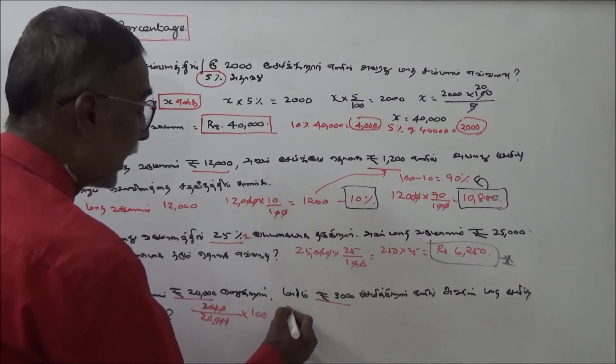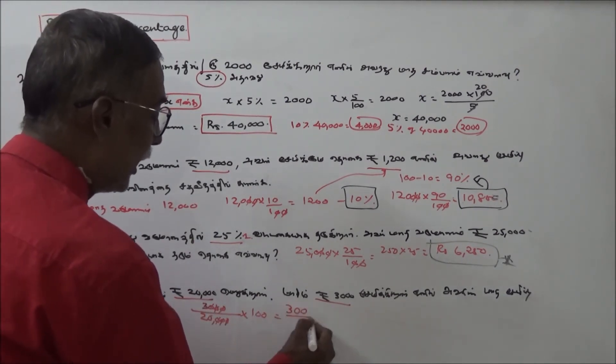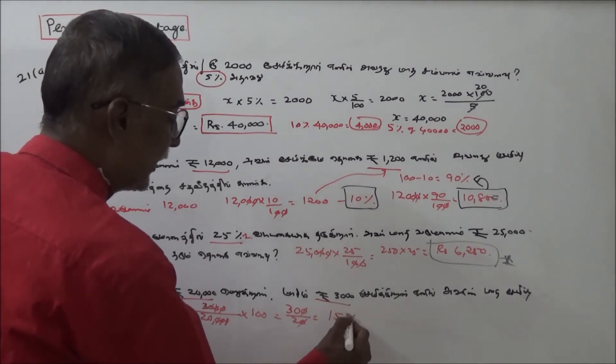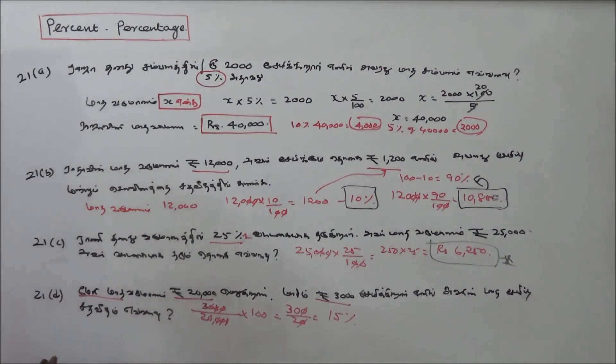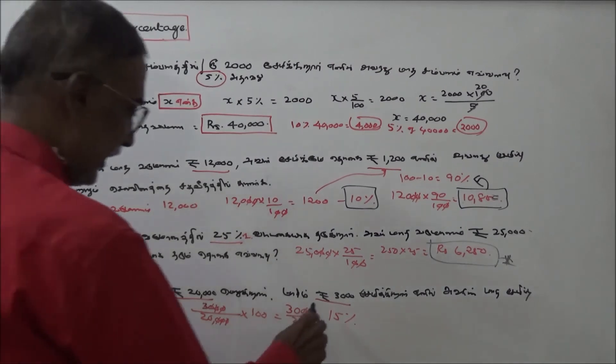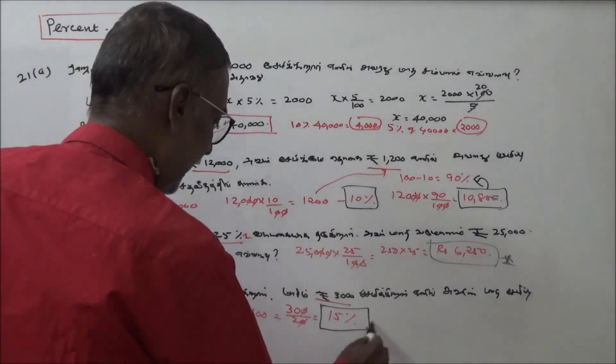Calculate 3,000 divided by 20,000, then multiply by 100. This is 300 by 20, which equals 15%. Her monthly savings percentage is 15%. That's the answer.